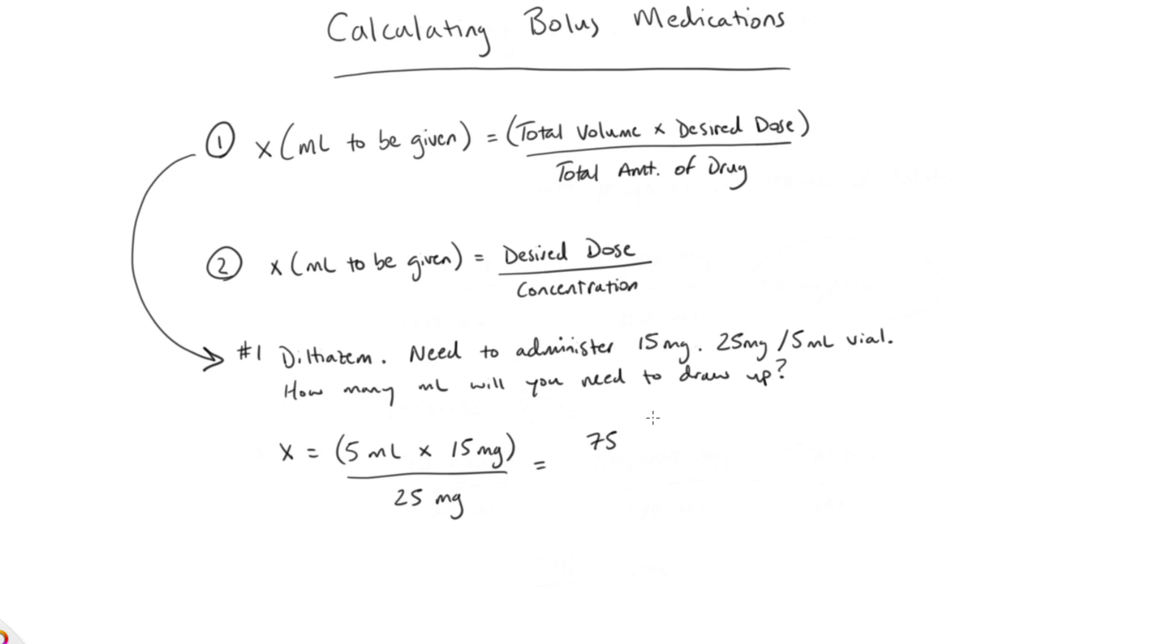And when we convert all those things, we see that we get 75 milliliter milligrams up top and 25 milligrams down below. We cancel out the milligrams. We divide 75 by 25, and we're left with 3 mLs.